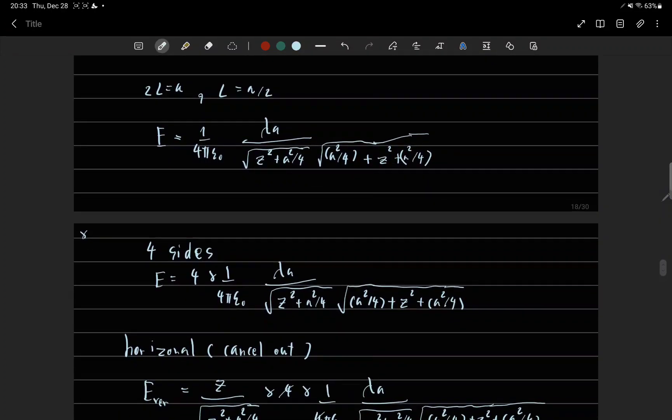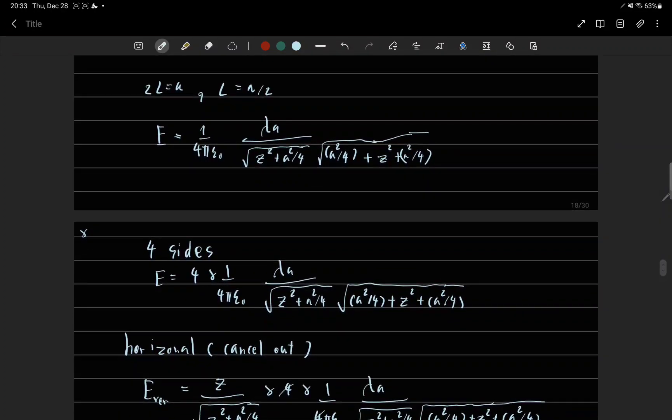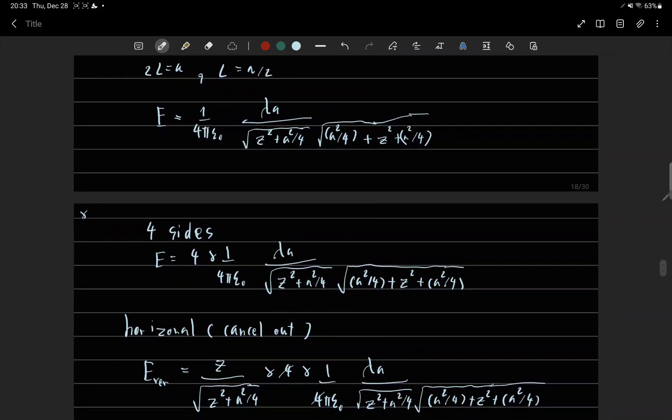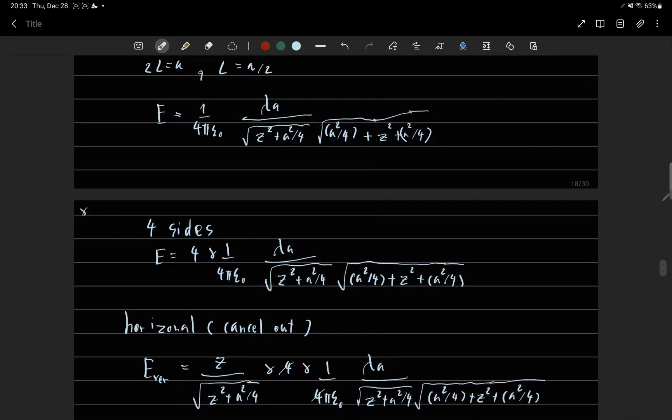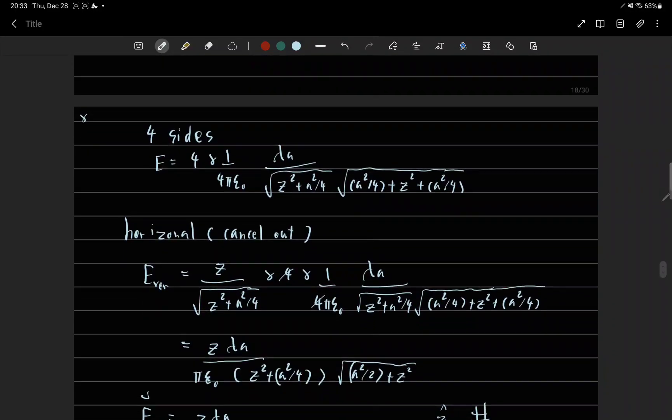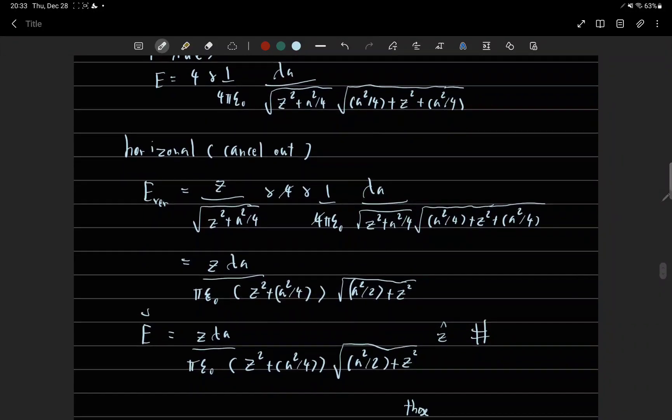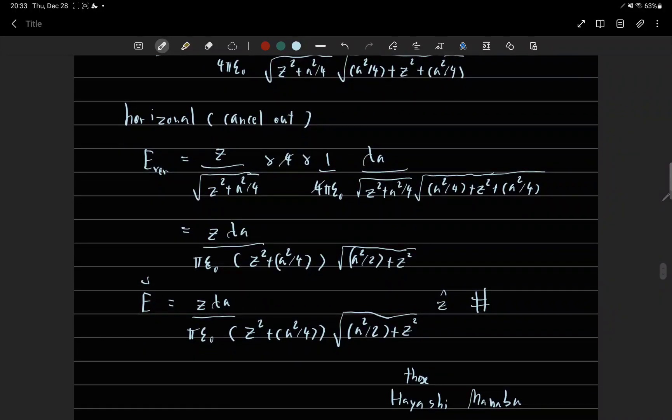And for horizontal component is cancel out so only vertical component count. So the answer is in the vector form for electric field is here.